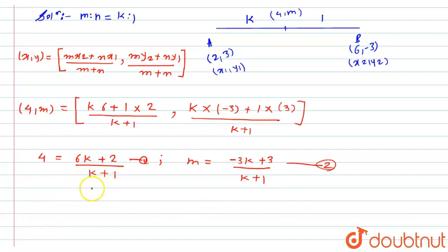So k plus 1 will go to that side and become multiplied to 4, so this will become 4k + 4 = 6k + 2. From here, I will get 2k = 2, which means the value of k = 1.